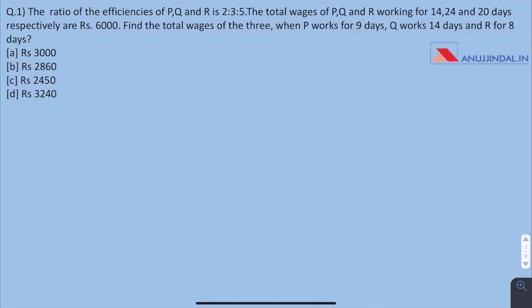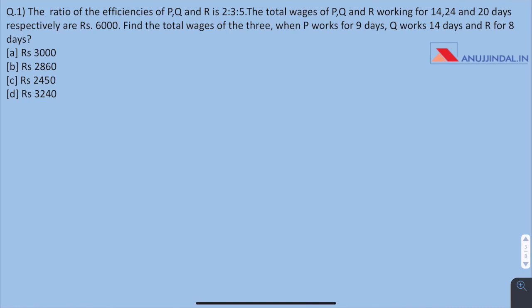Moving forward to the questions. Question 1. The ratio of efficiencies of P, Q and R is 2 is to 3 is to 5. The total wages of P, Q and R working for 14, 24 and 20 days respectively are 6,000. Find the total wages of 3 when P works for 9 days, Q works for 14 days and R works for 8 days.